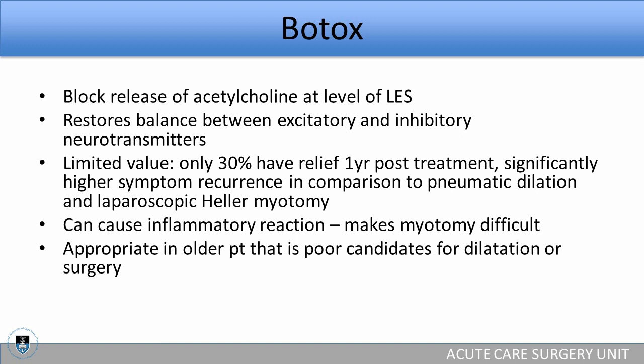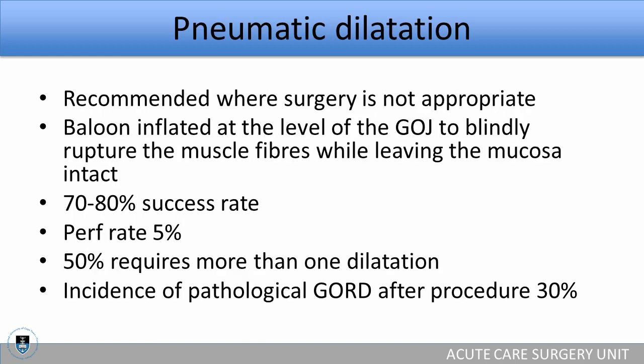Botox is an appropriate option for older patients who are poor candidates for dilatation or definitive surgery. Pneumatic dilatation is recommended where surgery is not appropriate and should be done by an experienced gastroenterologist or endoscopist. The balloon is inflated at the level of the gastroesophageal junction to blindly rupture the muscle fibers while leaving the mucosa intact. It has a 70% to 80% success rate, but also a perforation rate of about 5%, which is quite high. 50% of patients require more than one dilatation.